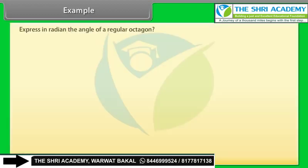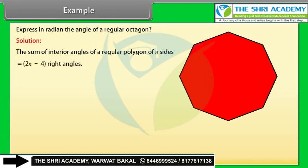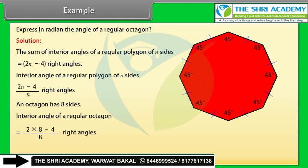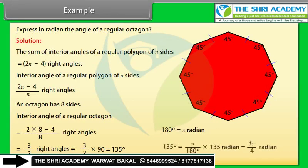Example: Express in radians the angle of a regular octagon. Solution: The sum of interior angles of a regular polygon of n sides equals (2n−4) right angles. The interior angle equals (2n−4)/n right angles. An octagon has 8 sides, so the interior angle equals (2×8−4)/8 = 3/2 right angles = 3/2 × 90 = 135 degrees. Since 180 degrees equals π radians, 135 degrees equals (π/180) × 135 = 3π/4 radians.